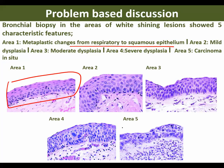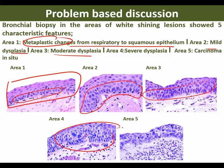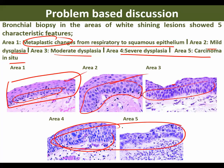It has changed to squamous — it is metaplasia, a metaplastic change. Then, see the basal cells — they are increasing here, it is mild dysplasia. Here it is increased more, it is moderate dysplasia. It is severely increased in both cases — it is severe dysplasia, carcinoma in situ. So it starts with metaplasia, goes to mild dysplasia, moderate dysplasia, severe dysplasia, and ends up with carcinoma in situ. In these five slides, I may ask any one — it is very, very important.